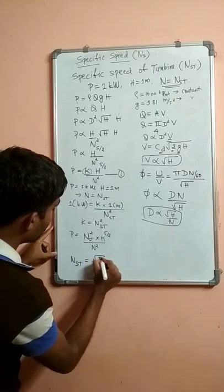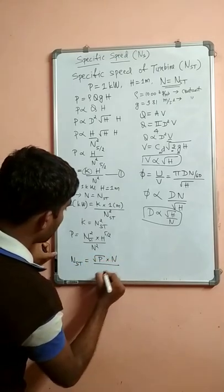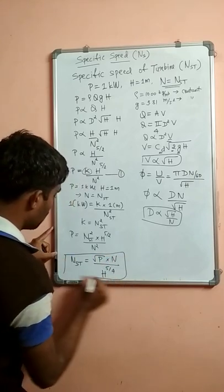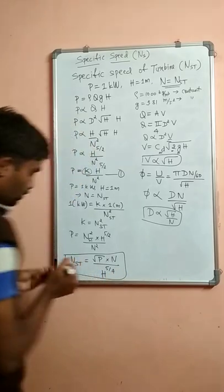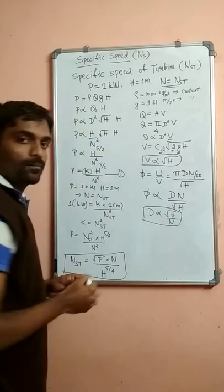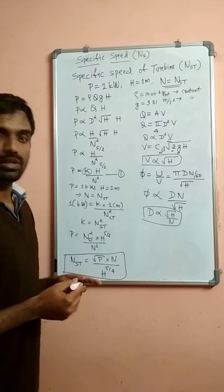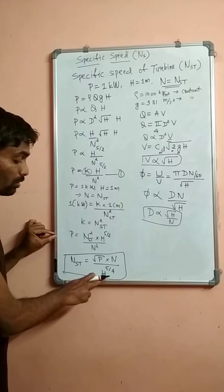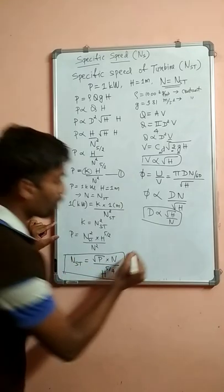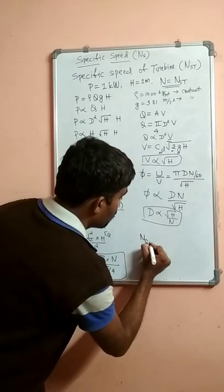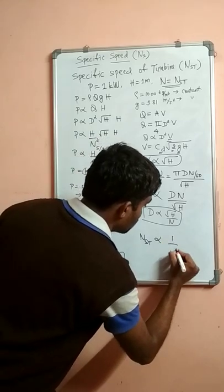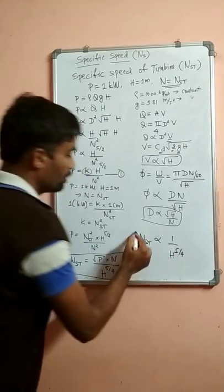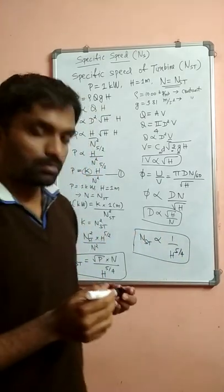Substituting the value of K in equation number 1, we get P equals N-S-T square times H raised to 5 by 2 divided by N square. Re-arranging the equation for N-S-T, we get the expression: N-S-T is equal to N times square root of P divided by H raised to 5 by 4.